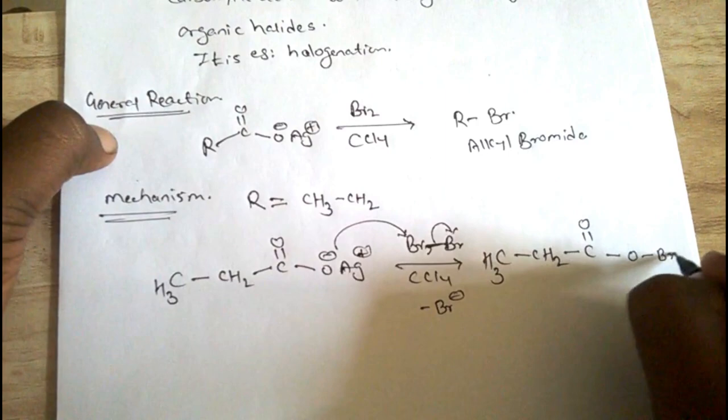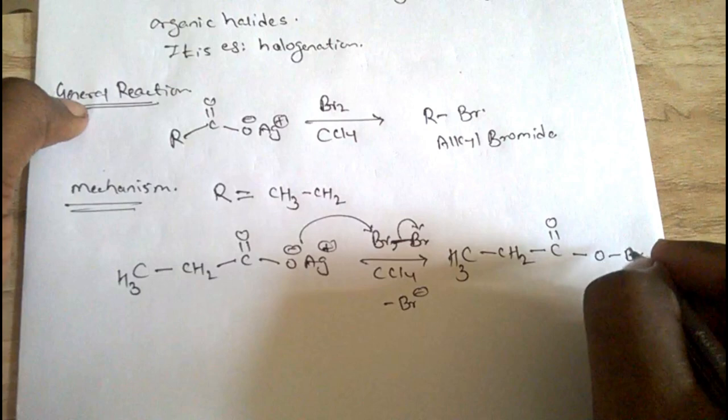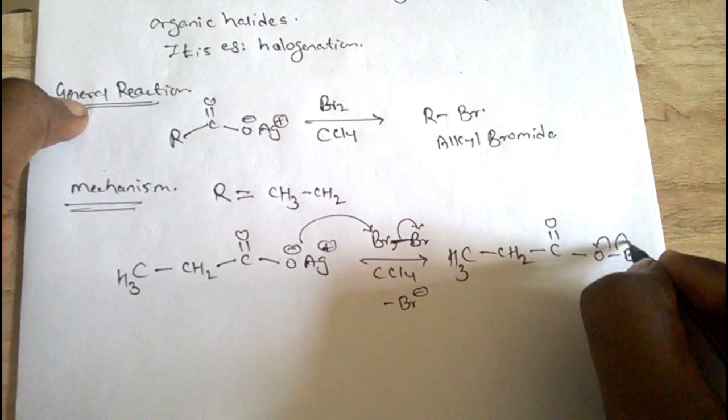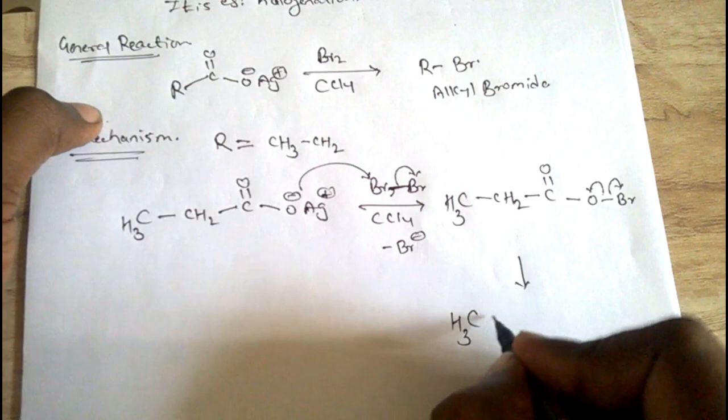Here the free radical. Here the homolytic fission takes place. We get CH₃CH₂COO• plus Br.